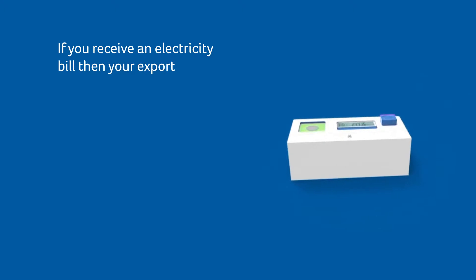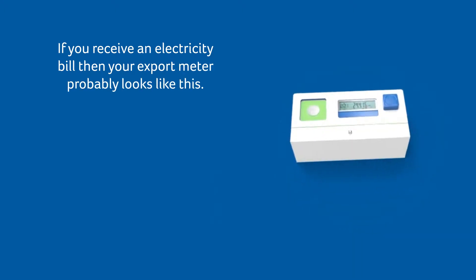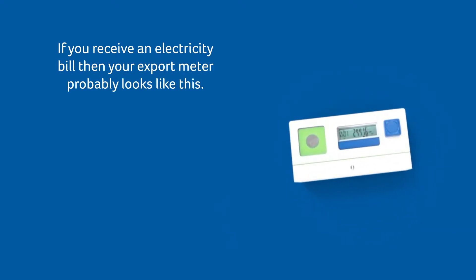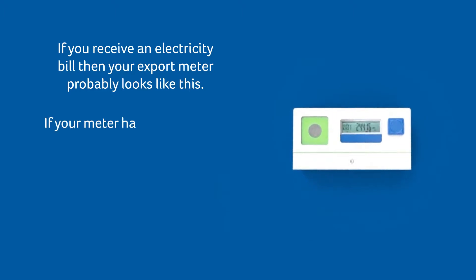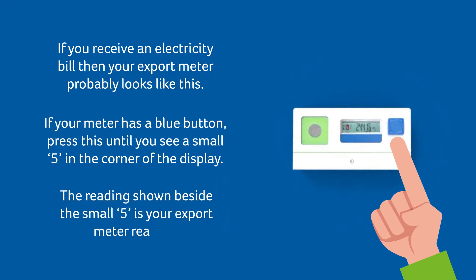If you receive an electricity bill, then your export meter probably looks like this. If your meter has a blue button, press this until you see a small five in the corner of the display. The reading shown beside the small five is your export meter reading.